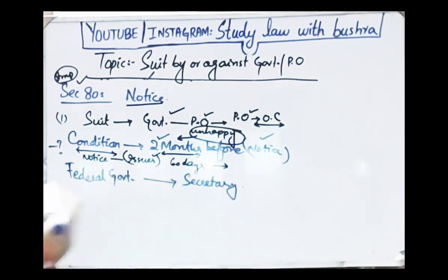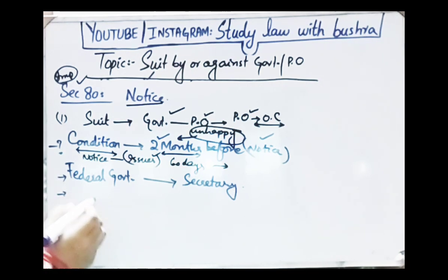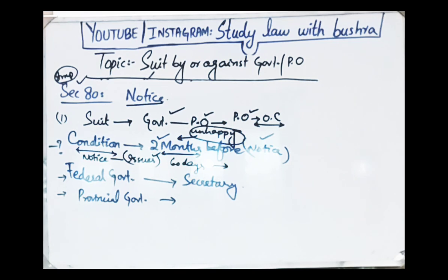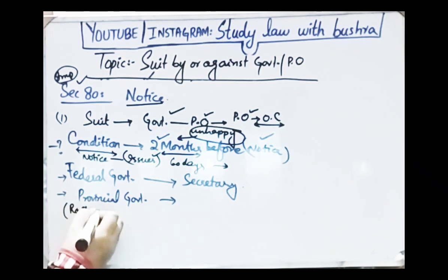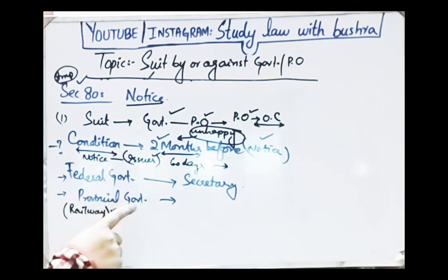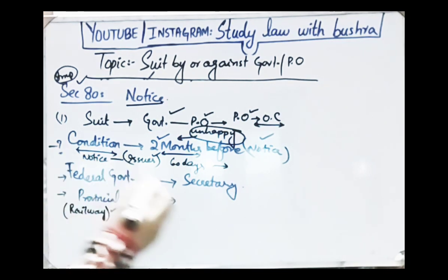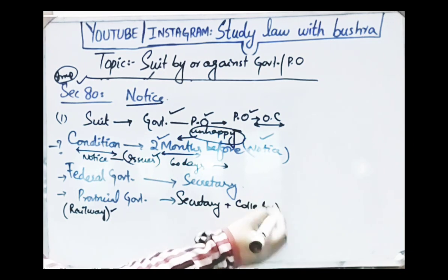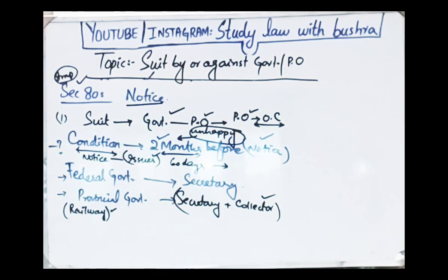Now, when and how should this notice be given? In case of suit against the federal government, notice is given to a Secretary to that government. Secondly, in case of suit against the provincial government — other than suits relating to affairs of railway — notice is given to a Secretary to that government or the Collector of the District.